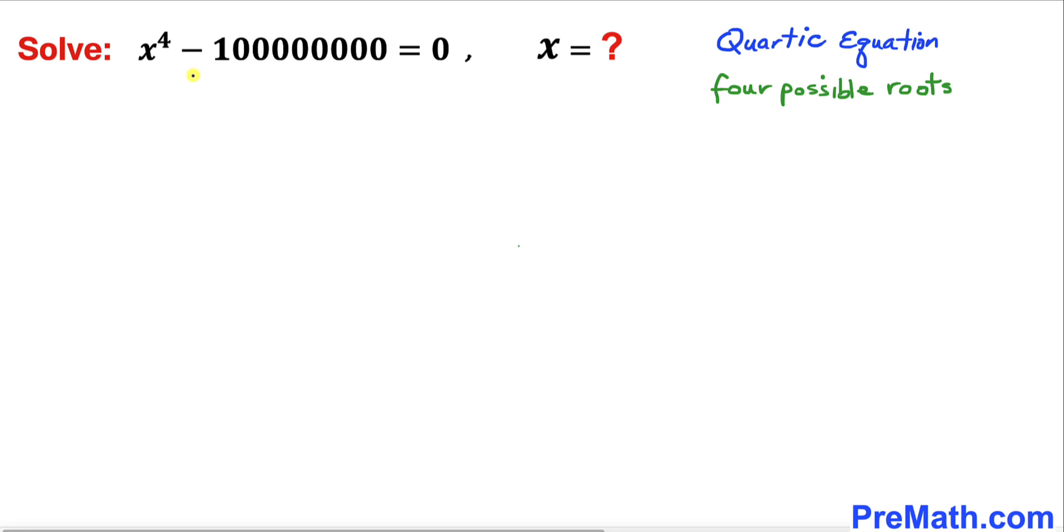Now let me go ahead and manipulate this equation. I can write this x^4 as (x^2)^2 minus, and I am going to write this 100 million as (10,000)^2 equals to 0.